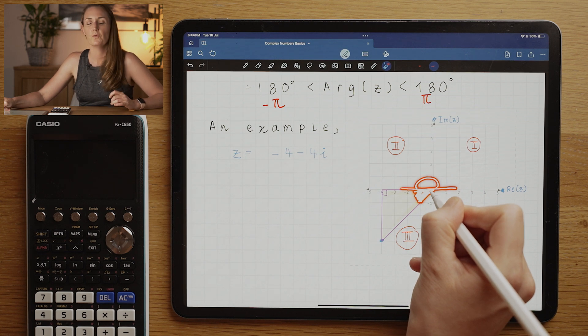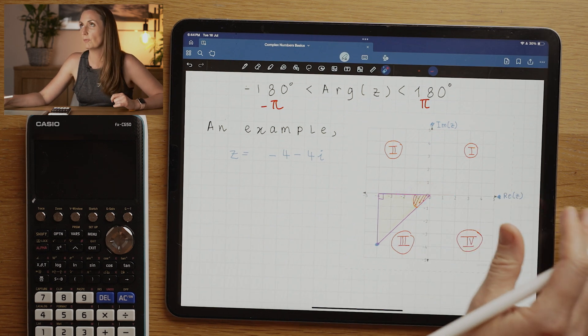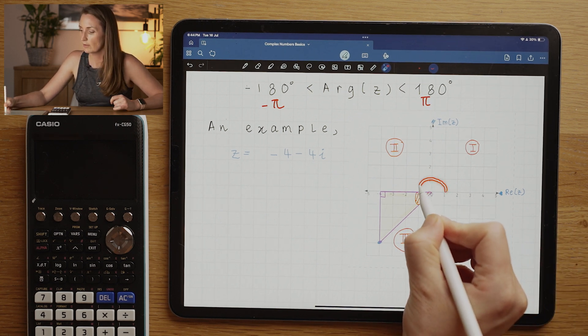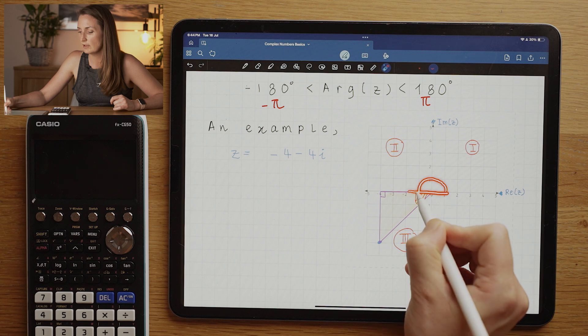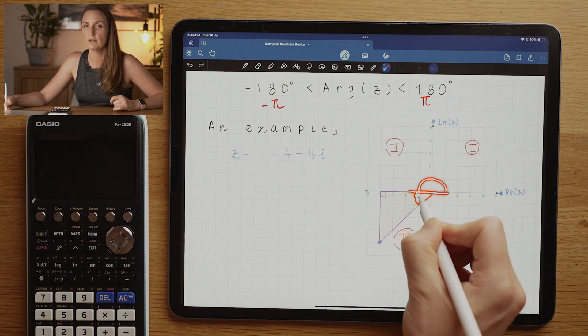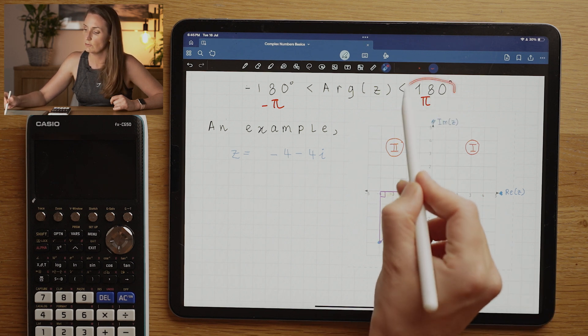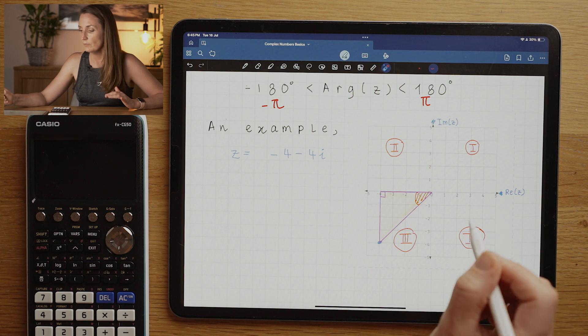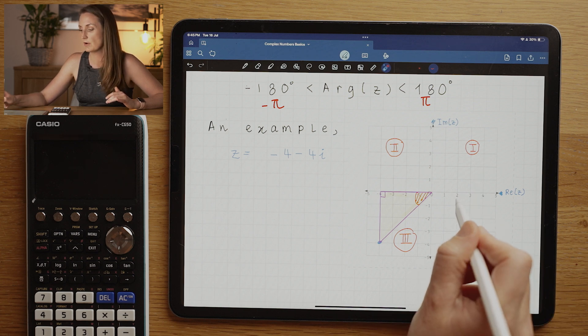But that becomes a little bit illegal when we're trying to find the principle argument form because the angle would be too big. Look, that's already 180 degrees and then we're going to add on this extra angle here, so we're going to surpass the limits. We're going to be over 180 degrees.